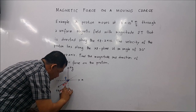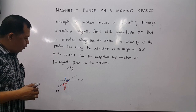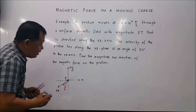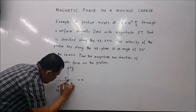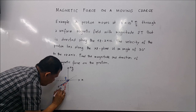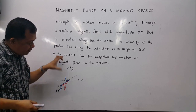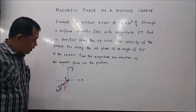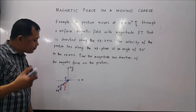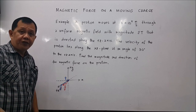So this is the velocity v. The magnetic field, according to the problem, has a magnitude of 2 tesla and it's directed along positive z. The diagram is three-dimensional and you may draw it in any view that you feel comfortable with.